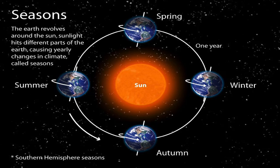The Earth completes one revolution around the sun in 365 and one-fourth days. And this time period makes one year on the Earth. Yeh time period ek saal hota hai. And the revolution of the Earth is responsible for the change in season.